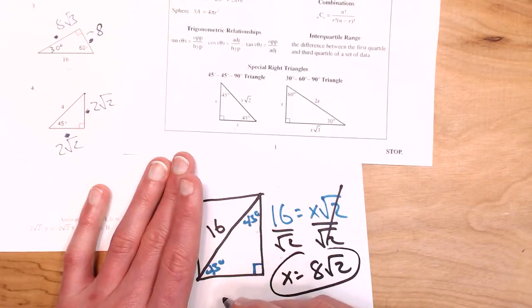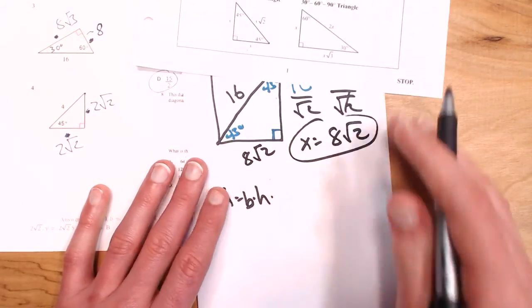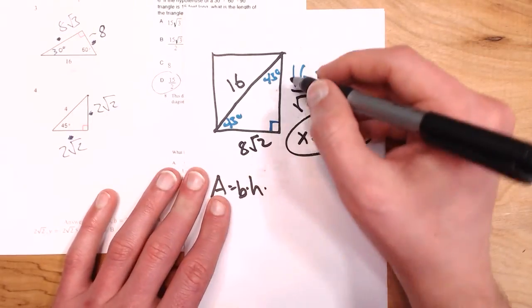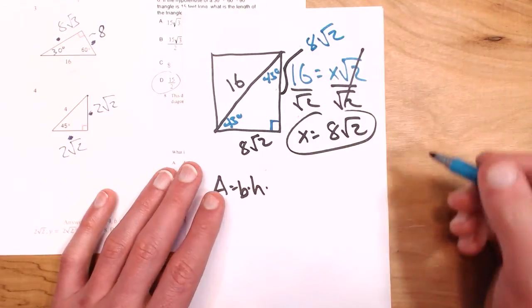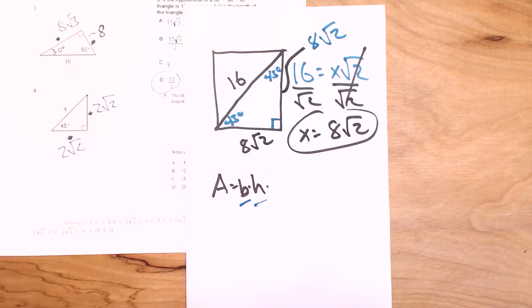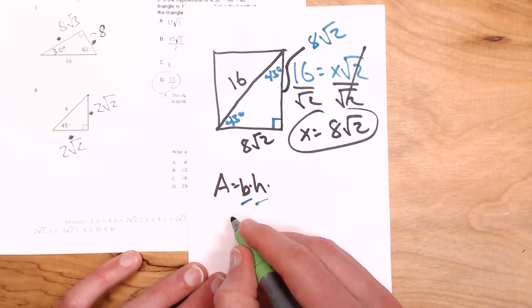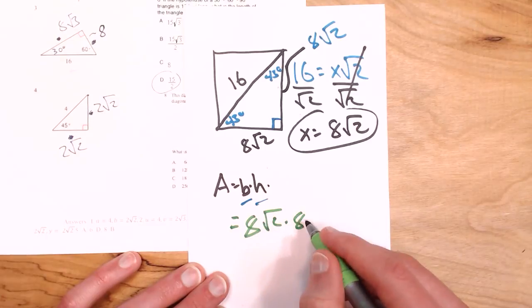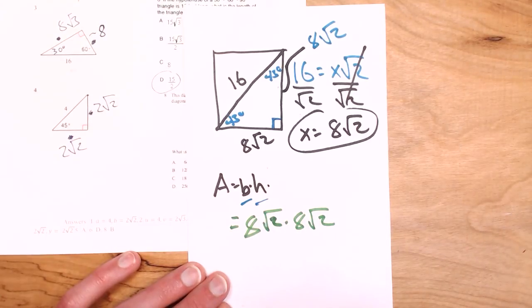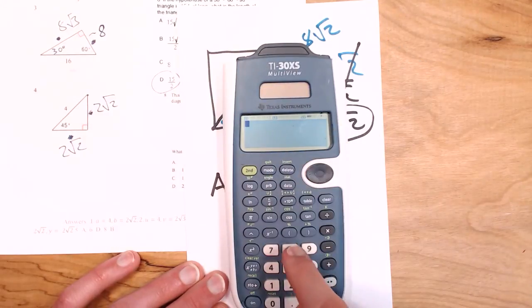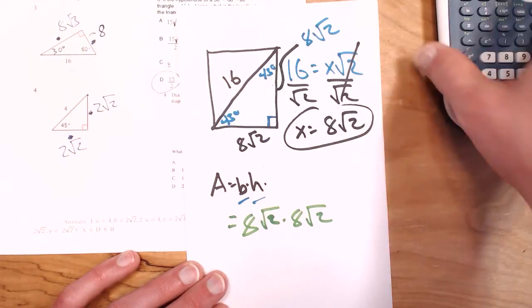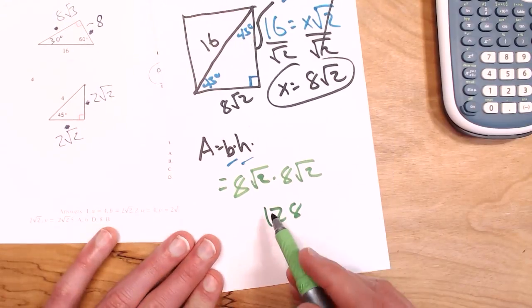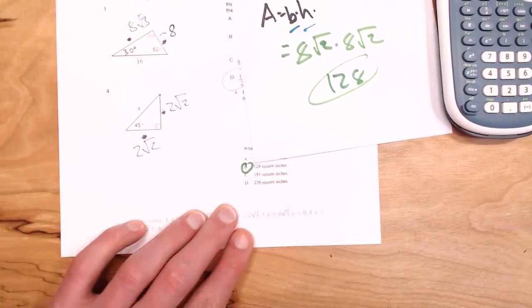I'm not done yet — I just found the side length. All sides of a square are equal, so both the base and height are 8 root two. Area equals base times height, so area equals 8 root two times 8 root two, which equals 128. The answer is choice B.